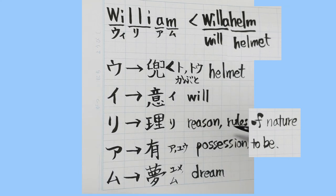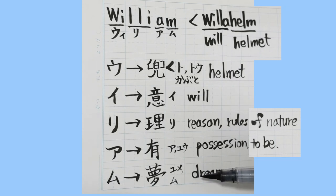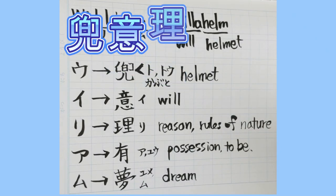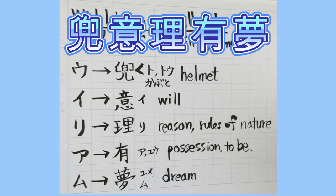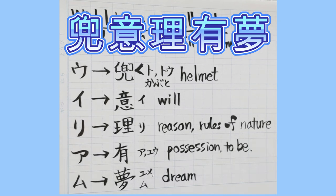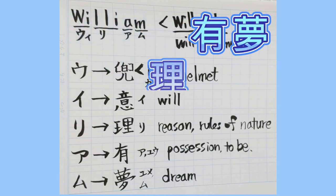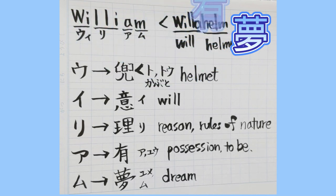All together, your name William means: a helmet, you have a will, it's about the rules of nature and position, and your dream. So William — thank you for your comment! If you like it, please hit the like button, and thank you for watching. Please subscribe to this channel and I'll see you in the next video!